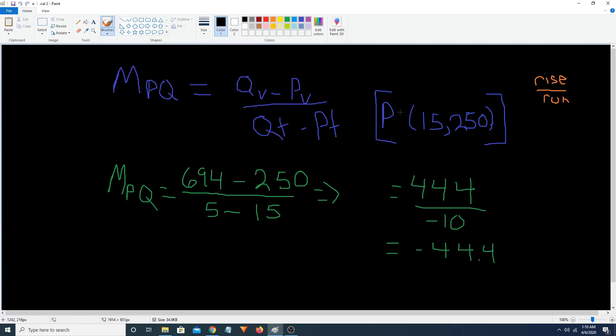We're given the point p, 15 comma 250. And so with this point, we know that these points go in here and there for all of our secant lines.